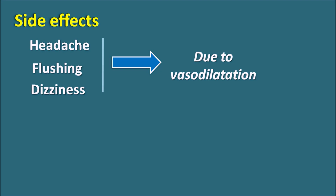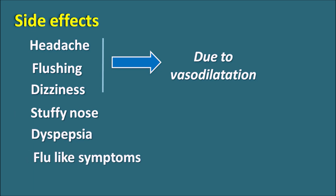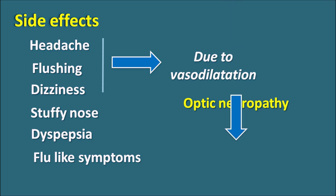Other side effects include stuffy nose, dyspepsia, indigestion, and flu-like symptoms. An important but rare side effect is optic neuropathy — the drug can cause some loss of vision, which may be attributed to inhibition of phosphodiesterase type 6 enzyme. This side effect is not observed in all patients; it may occur at high doses over a prolonged period.